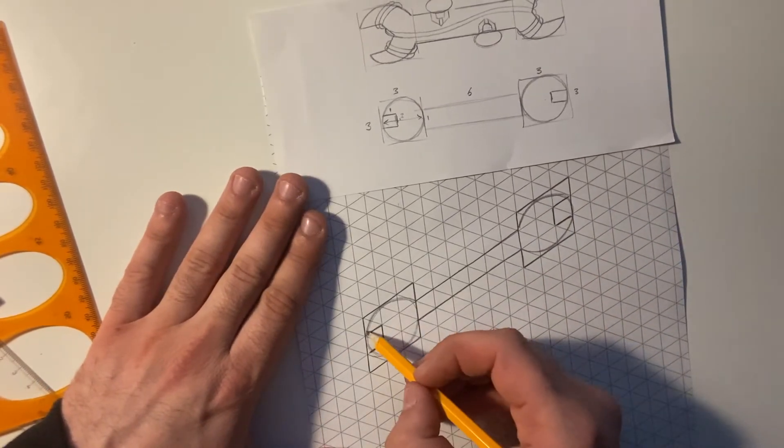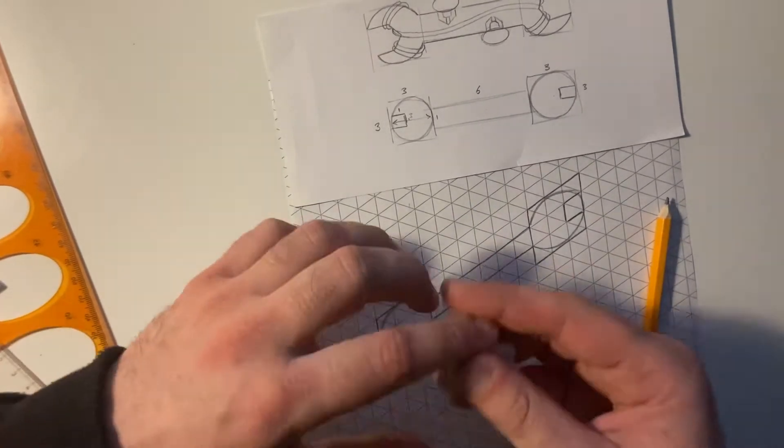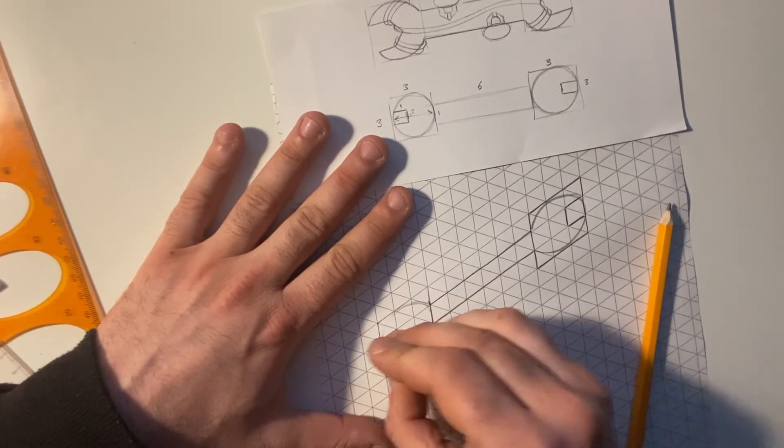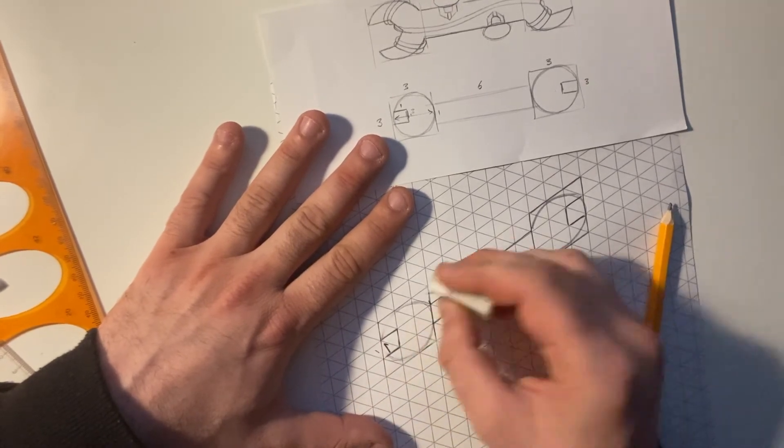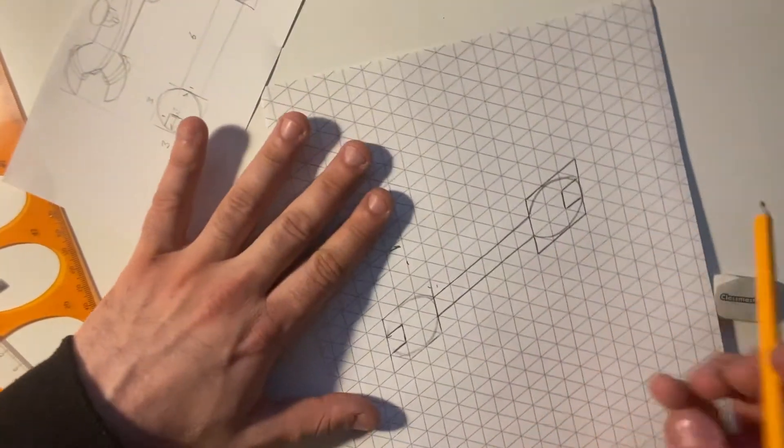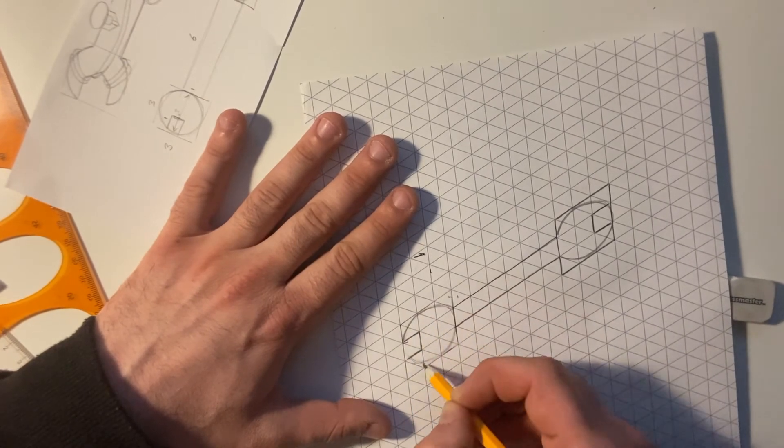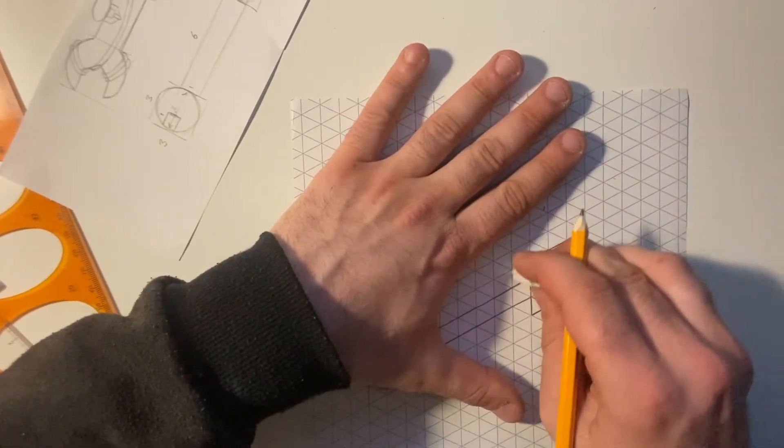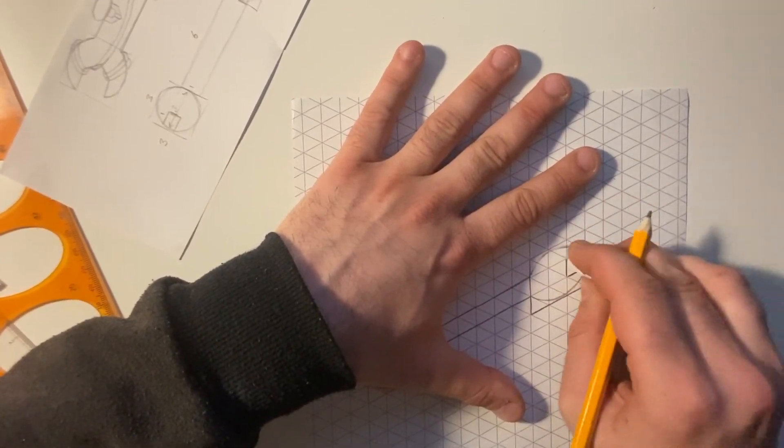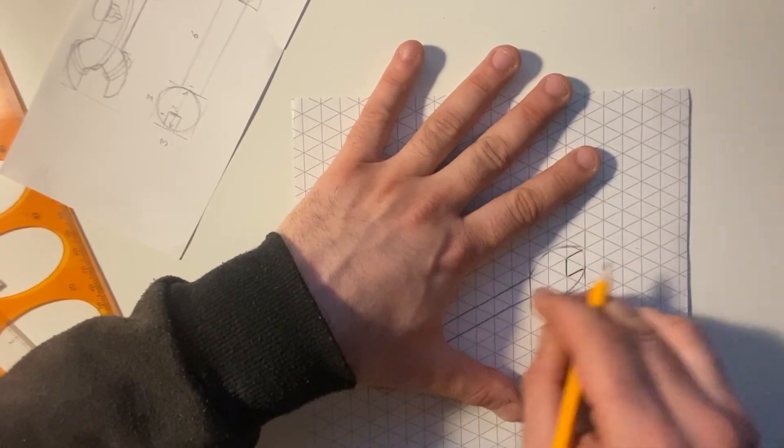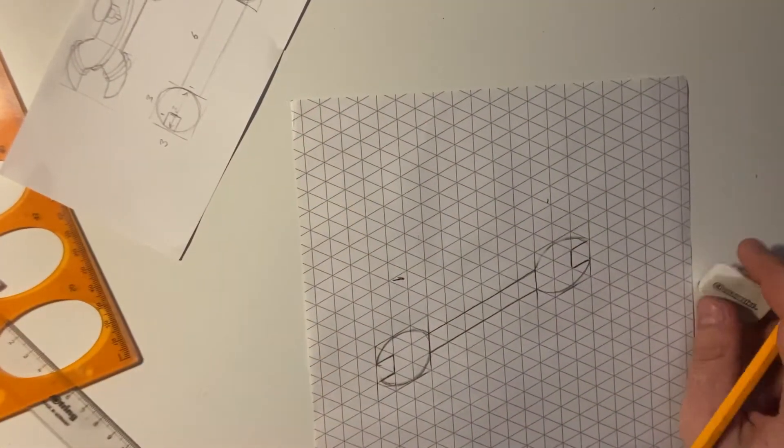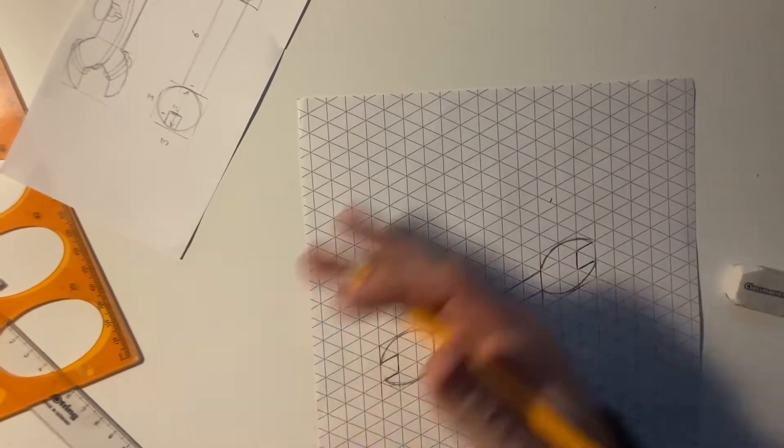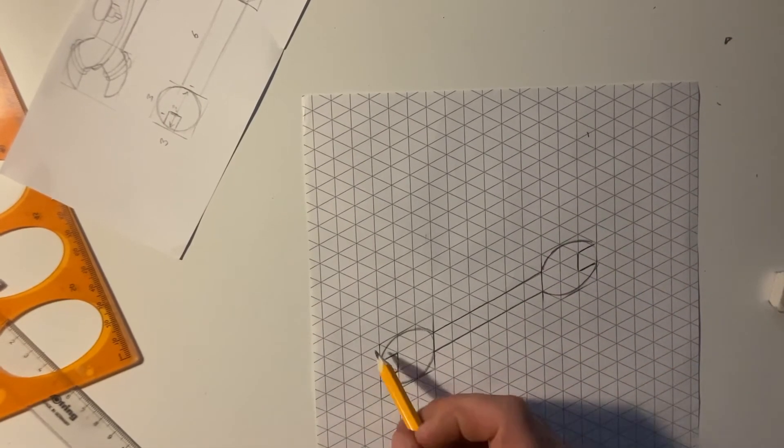OK. You can now begin to see, if I erase these initial guidelines of that square. You can begin to see that spanner head taking shape. Same on this far end. Remove any unnecessary guidelines. Like so. So again, I now need to think about its depth.